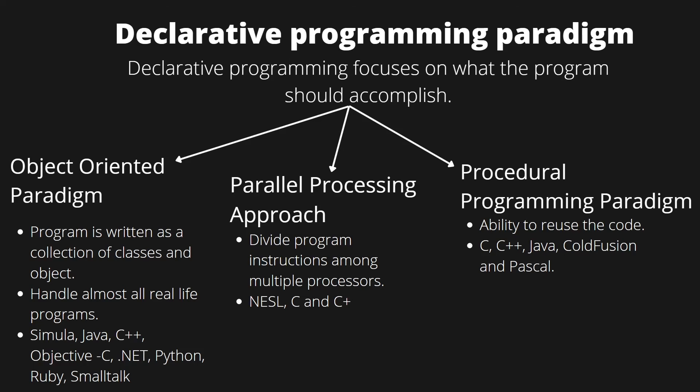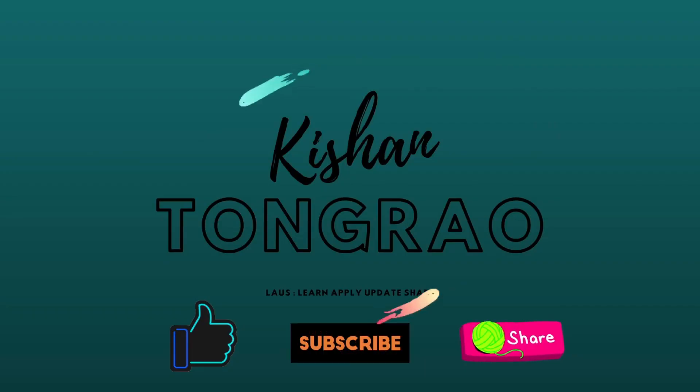Next we have the parallel processing approach, where we divide program instructions among multiple processors. Languages such as NESL, C, and C++ support this approach and satisfy the definition of the declarative programming paradigm. Finally, we have procedural programming paradigm, which offers the ability to reuse code. Languages like C, C++, Java, ColdFusion, and Pascal satisfy the definition of procedural and declarative programming paradigm. Thank you everyone.